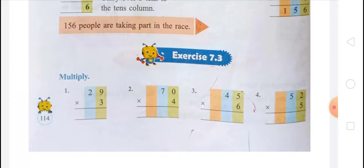The next is 52 multiplied by 5. Five times 2 ones equals 10, write 0 and carry 1. Five times 5 tens equals 25, plus 1 carry equals 26 tens. So the answer is 260. You have to solve exercise 7.3 and complete up to exercise 7.3 in your classwork copy. Thank you.